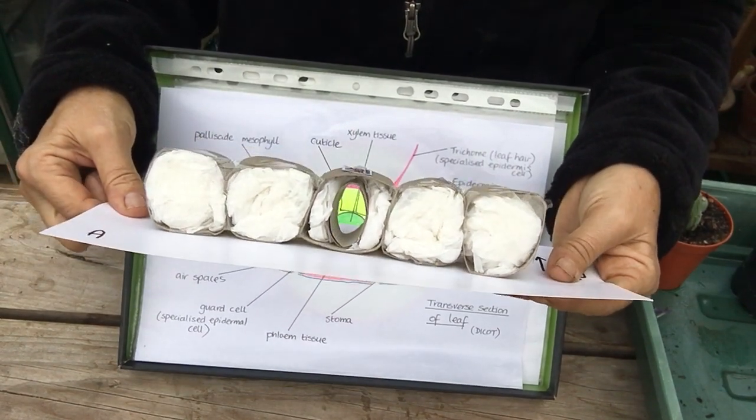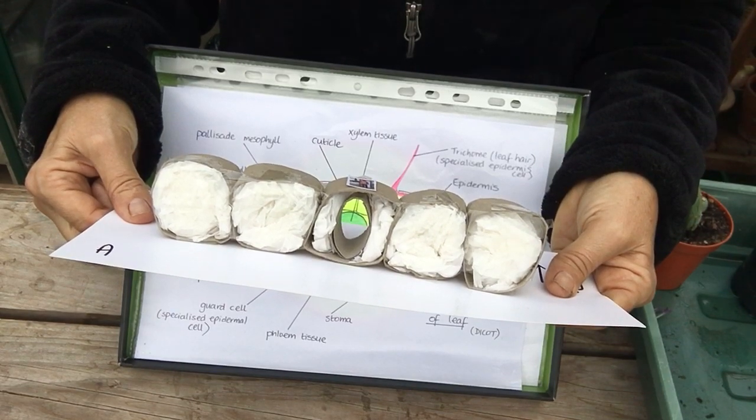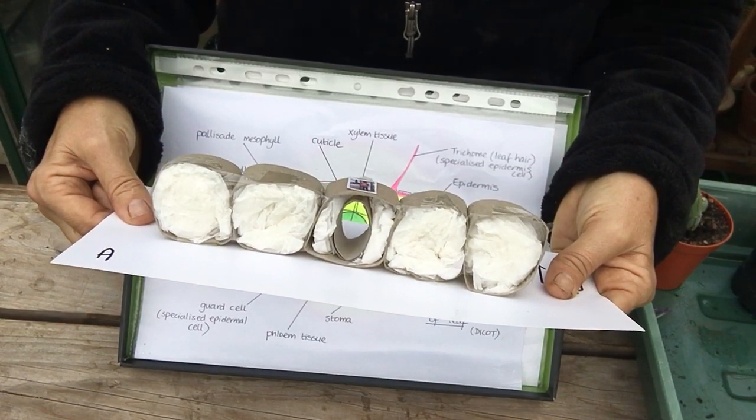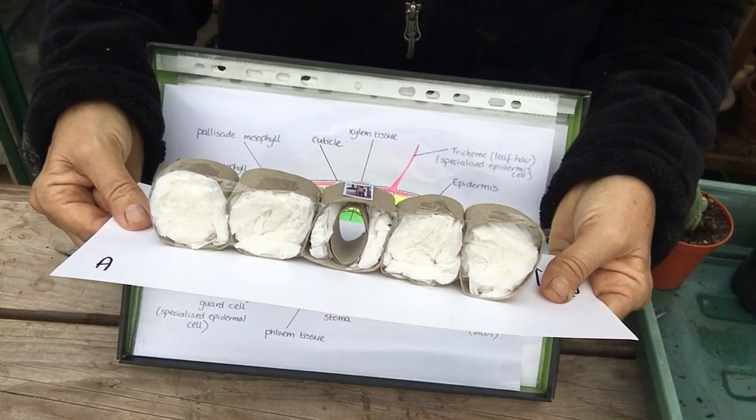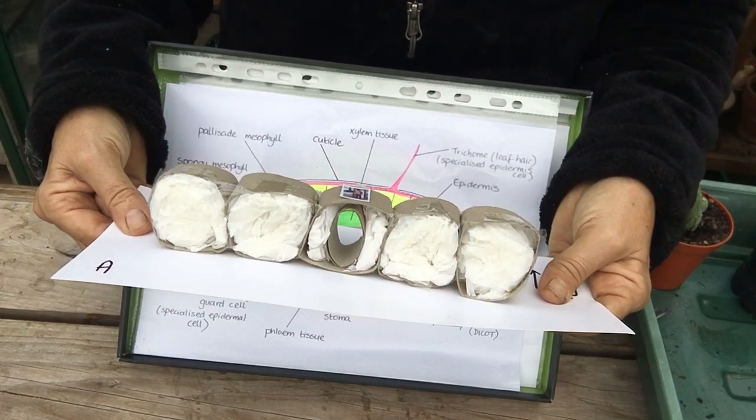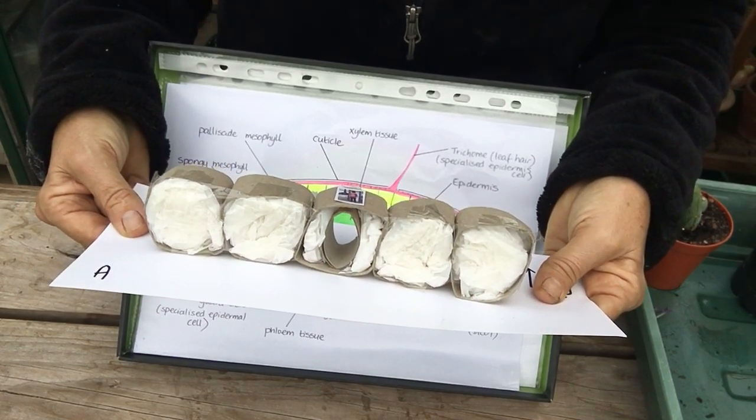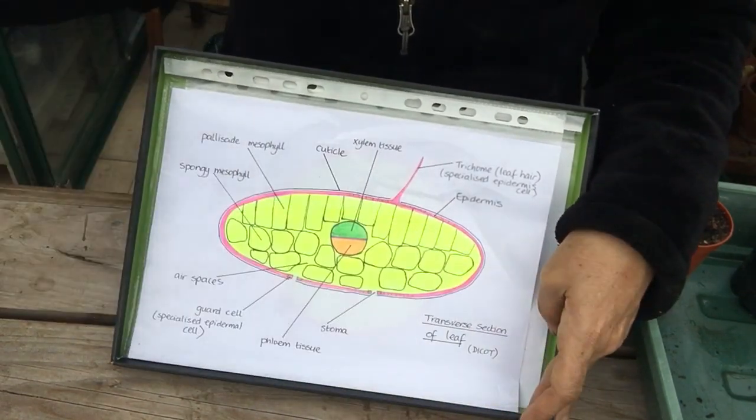So it's the stoma that allows gases to enter the leaf such as carbon dioxide, oxygen to leave the leaf, and also water to leave the leaf via transpiration. So the stomata are really important in gaseous exchange and transpiration. That's our epidermis.